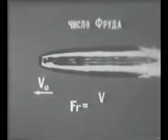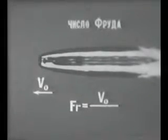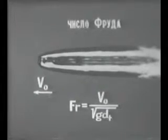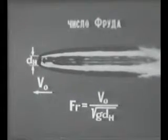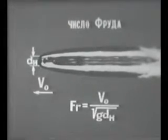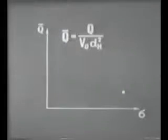Важную роль играет также число Фруда, выражающее отношение сил инерции к гидростатическим силам. Объемный расход газа под дуга влияет на величину числа кавитации.